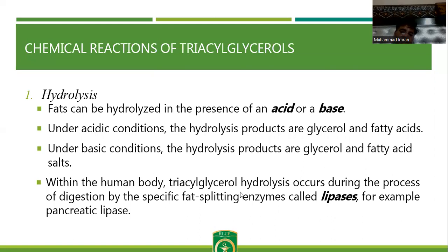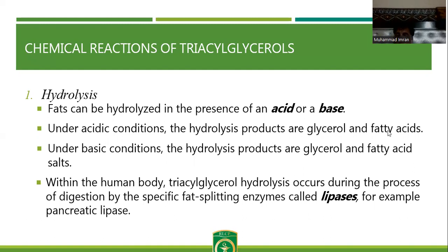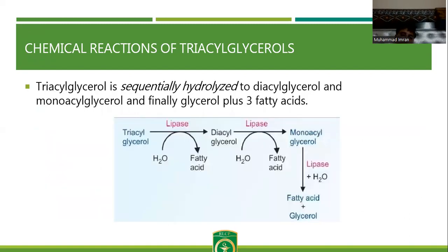Chemical reactions of triacylglycerol: all triacylglycerols may be hydrolyzed by an acid, a base, or enzymes like lipases. Under acidic conditions, the hydrolyzed products are glycerol and fatty acids. Under basic conditions, it produces glycerol and fatty acid salts, which are also known as soap. Within the human body, triacylglycerol hydrolysis occurs during digestion by specific fat-splitting enzymes known as lipases — pancreatic lipase or gastric lipase. Triacylglycerol is sequentially hydrolyzed into diacylglycerol, then monoacylglycerol, and finally into glycerol and three fatty acids inside the body.